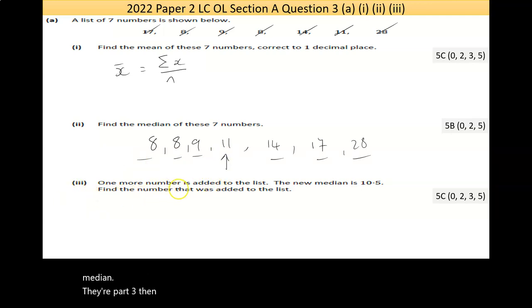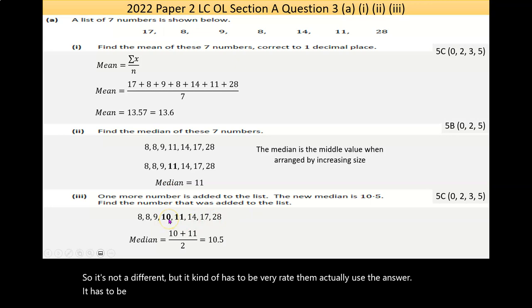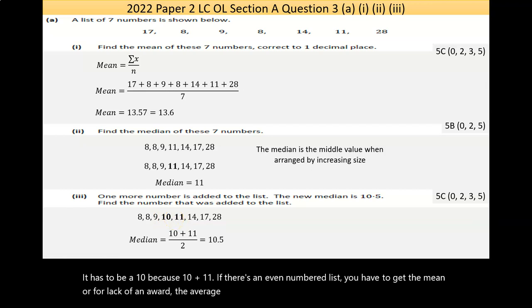Now part 3 then says, one more number is added to the list. The new median is 10.5, so it's going in this direction. Find the number that was added to the list. Now if you think about it, if it was like 6, the median would be halfway between 9 and 11, which would be 10. So it's not that. It has to be a 10, because 10 plus 11, if there's an even-numbered list, you have to get the mean, or for lack of a better word, the average, the mean of the two middle numbers, which is 10 plus 11, gives you 10.5.